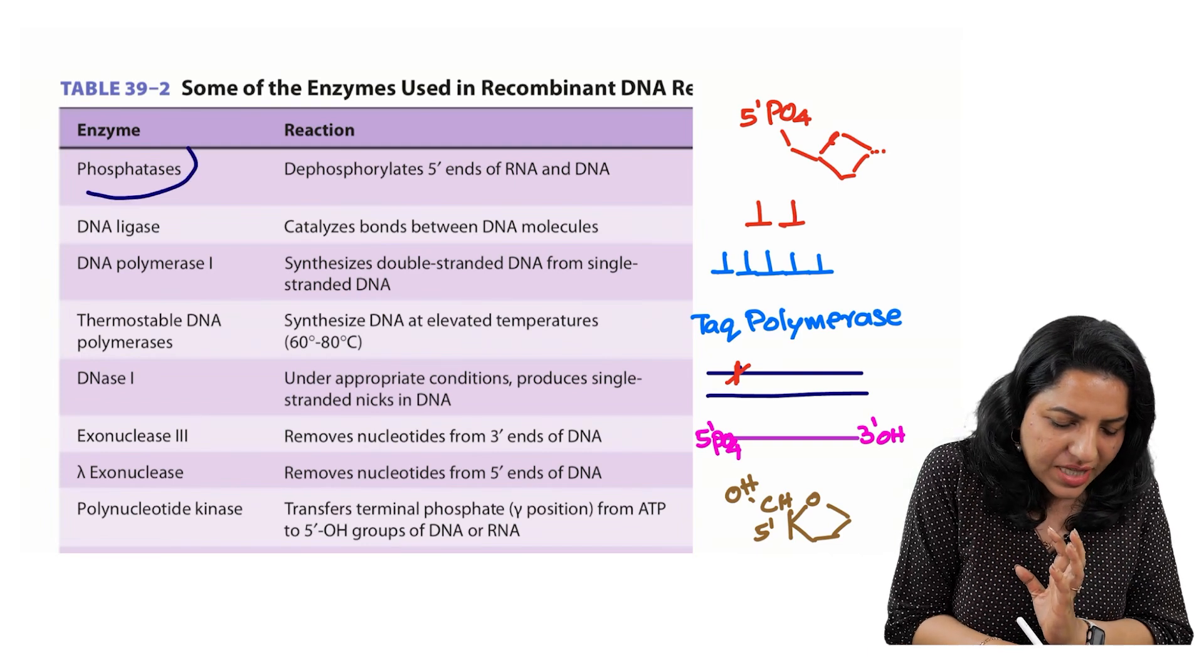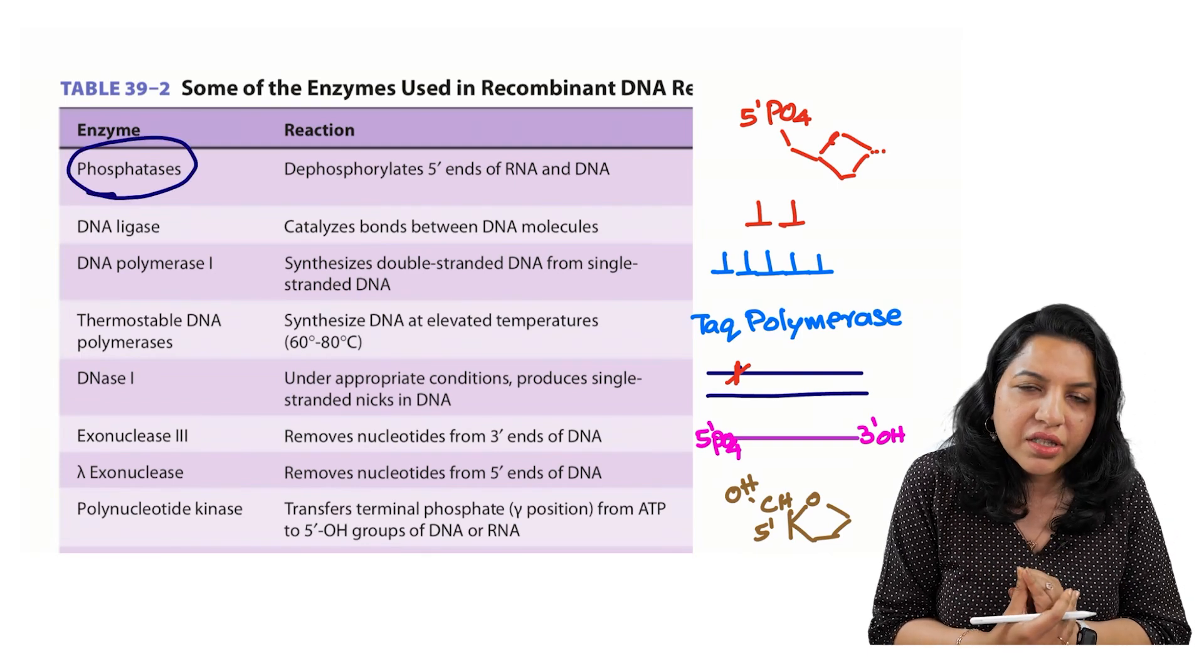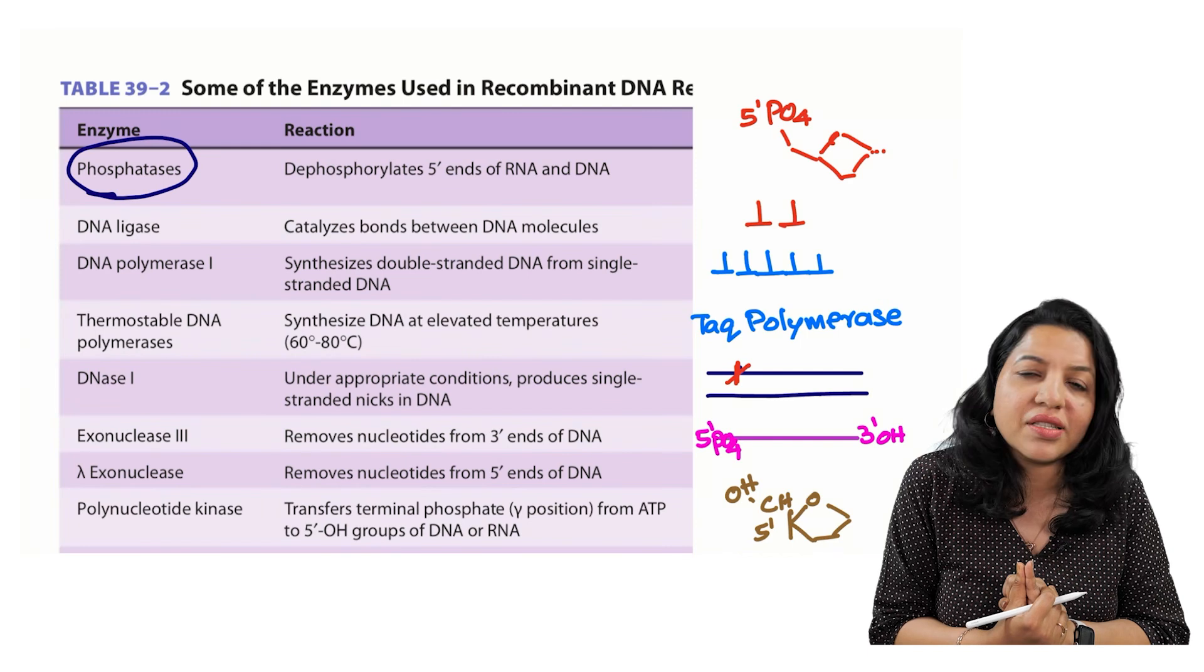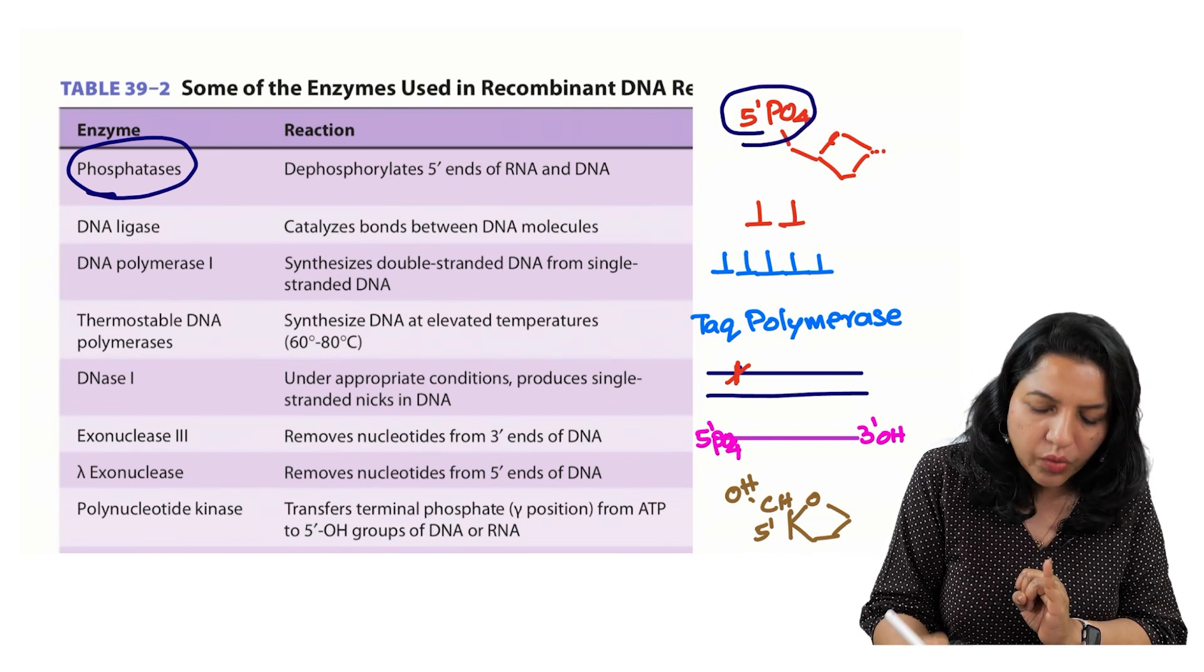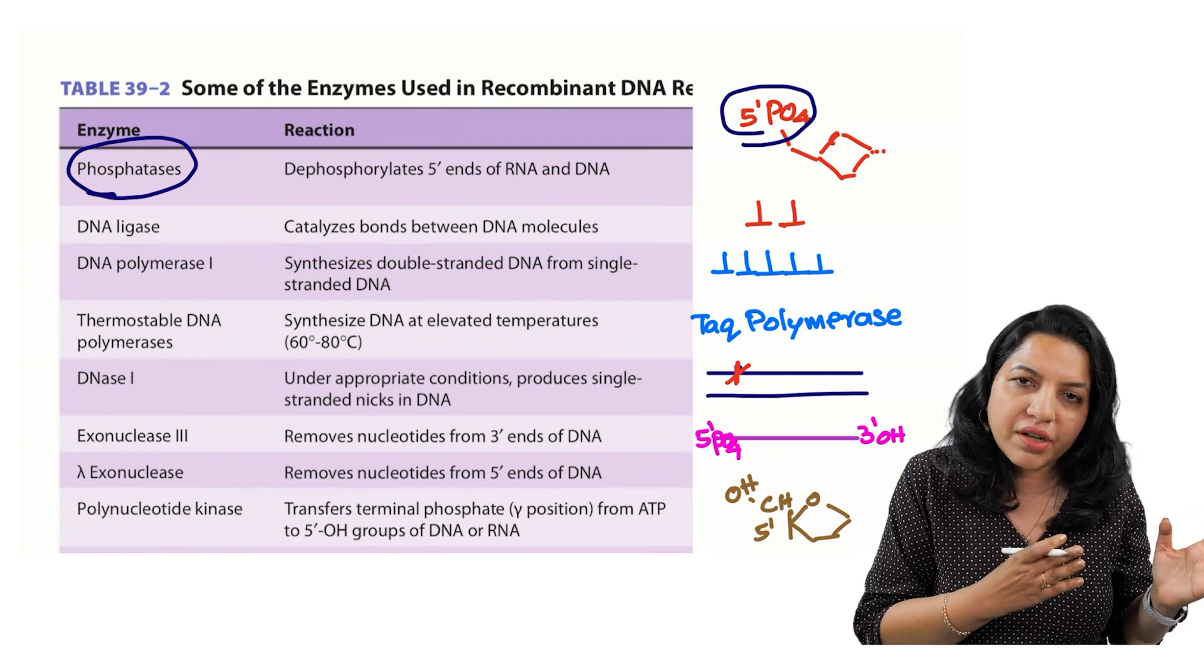I have given here, this is as per the table in Harper, that one is phosphatases. The name itself tells you what it is. It removes the phosphate group from the five prime end of an RNA or a DNA.